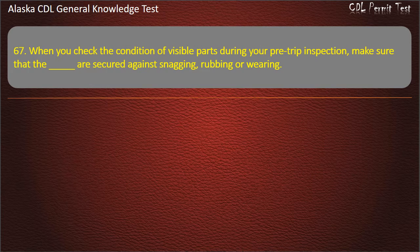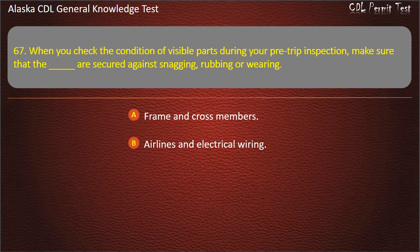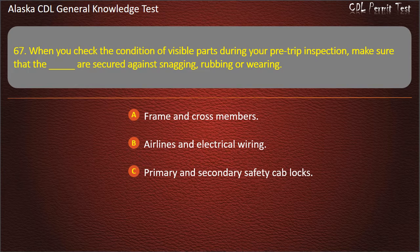Question 67. When you check the condition of visible parts during your pre-trip inspection, make sure that the airlines and electrical wiring are secured against snagging, rubbing or wearing. Answer: Airlines and electrical wiring.